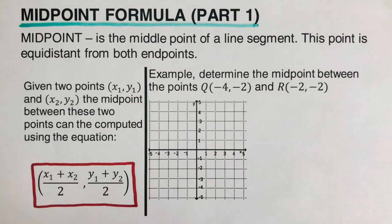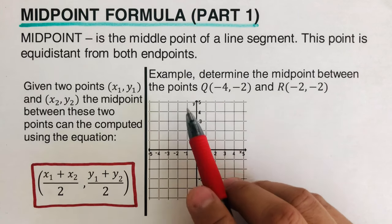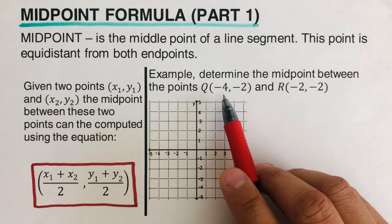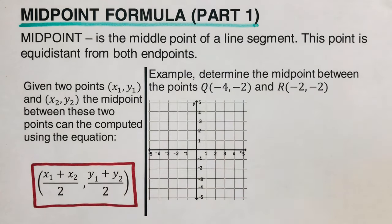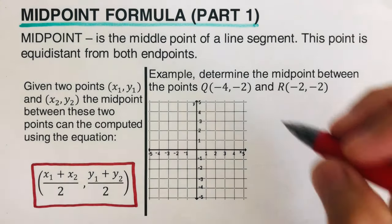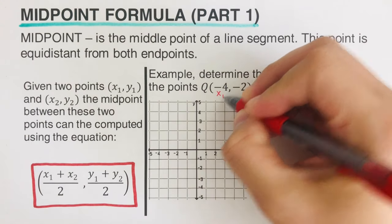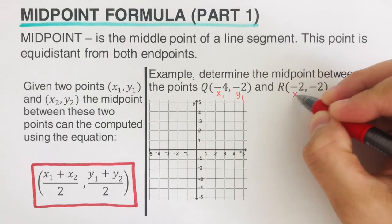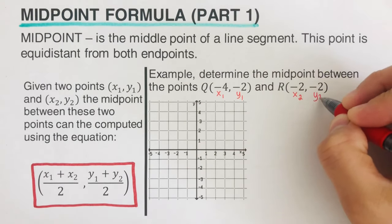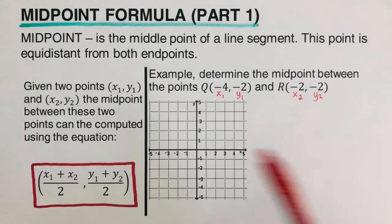Let's take the first example to see how we use this formula. We are supposed to determine the midpoint between point Q at (-4, 2) and point R at (-2, -2). The first step is to label the coordinates: the first coordinate is labeled x₁, y₁ and the second coordinate is labeled x₂, y₂. It is very critical that we label them so we know which value goes where.